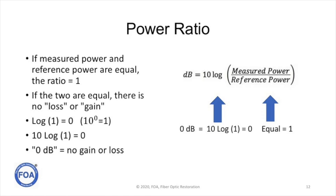Power ratio is a little easier to understand. It's measured in simple terms like watts of power. And that's a watt just like a light bulb is a 60 watt light bulb. If the measured power and the reference power are equal, then the ratio is 1. If the two are equal, there is no loss or no gain. Now the log of 1 is 0. Because 10 to the zeroth power is 1. And that's some fairly complex abstract mathematics that I ask you to take on faith. So in the equation, 10 times the log of 1 is 0. So 0 dB means no gain or no loss. The power is equal.